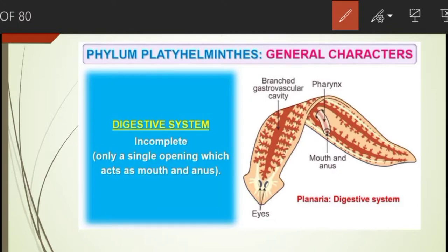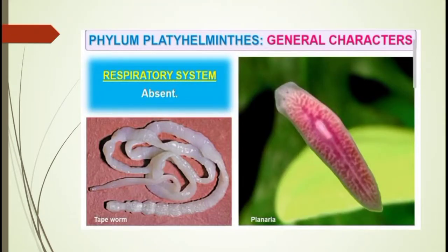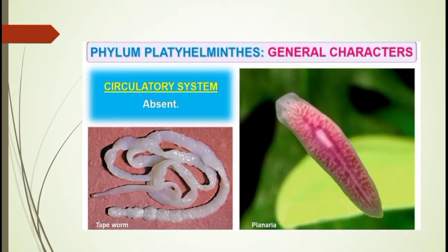The digestive system is incomplete — they have only a single opening which acts as both mouth and anus. As seen in the diagram, food is taken in through this opening and undigested waste material is also released through the same opening. Respiratory system is absent, so respiration occurs through the general body surface. Circulatory and skeletal systems are also absent in platyhelminths.